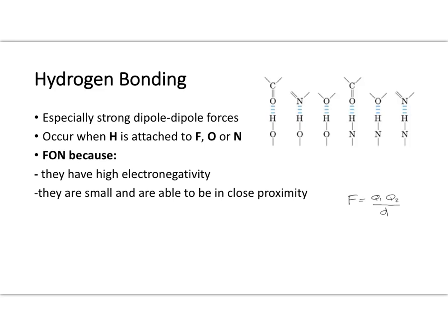Hydrogen bonding is a special type of dipole-dipole intermolecular force. It occurs when hydrogen is attached to fluorine, oxygen, or nitrogen. We can see how nitrogen and hydrogen are attached within a molecule, and that is what facilitates the formation of a hydrogen bond. The nitrogen-hydrogen bond within the molecule is not itself the hydrogen bond — the hydrogen bond is still an intermolecular force occurring between the molecule containing the N-H bond and another molecule.